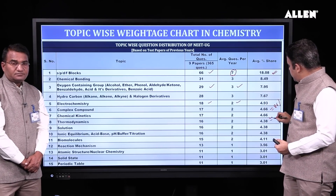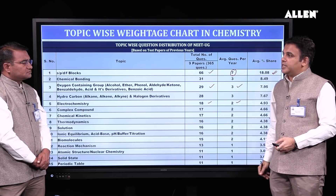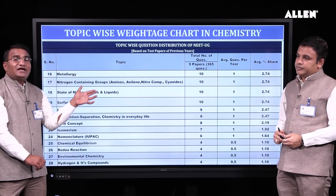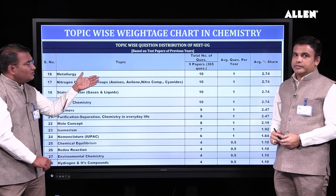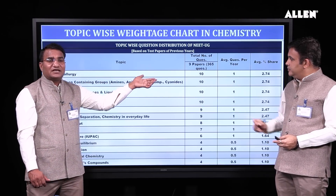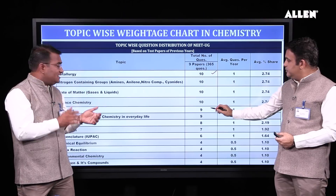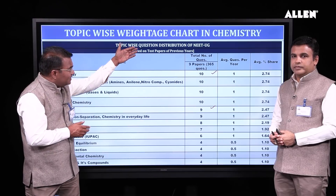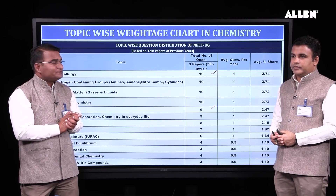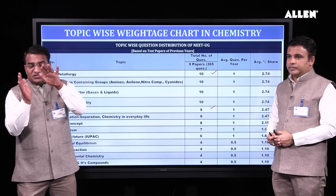If you sum up these top 15 chapters, they cover approximately 86% of the paper — meaning you can score approximately 155+ marks by covering these chapters. But your target should not be only 155 marks; your target should be 180 out of 180. For that, you need to read all Chemistry topics. For example, Haloalkanes — 10 questions were asked in 9 years, averaging 1 question per year. Polymers is a very small topic — only 4 pages — yet 1 question is asked every year from it in NEET. Some topics average 0.5, meaning one question every 2 years. Be mindful — you need to do exam-oriented preparation, knowing the weightage of each topic and continuing your preparation accordingly.